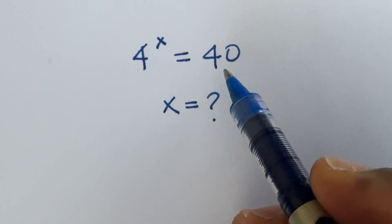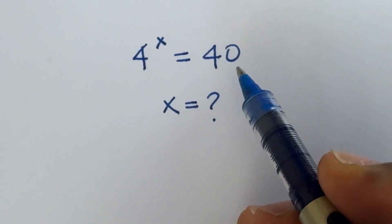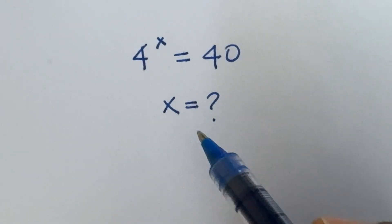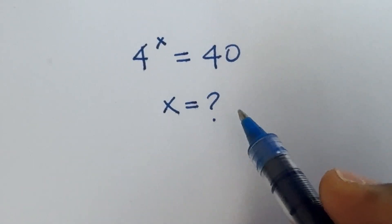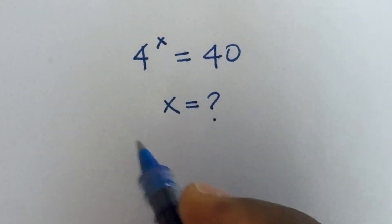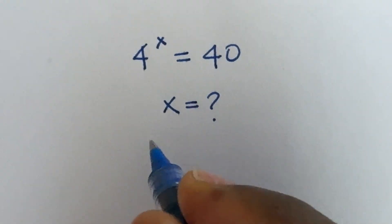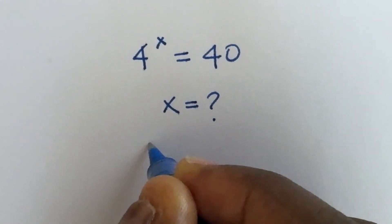4 raised to power x is equal to 40. Find x. Solution.